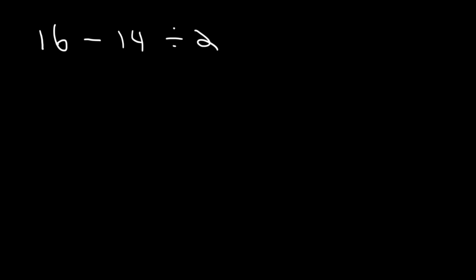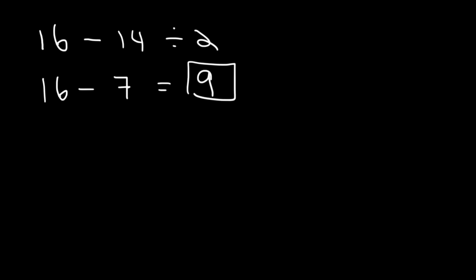Now let's try 16 minus 14 divided by 2. Should we divide first or subtract first? Division has more priority than subtraction, so divide first. 14 divided by 2 is 7, and 16 minus 7 is 9. Type it into a calculator to confirm — you will get 9.